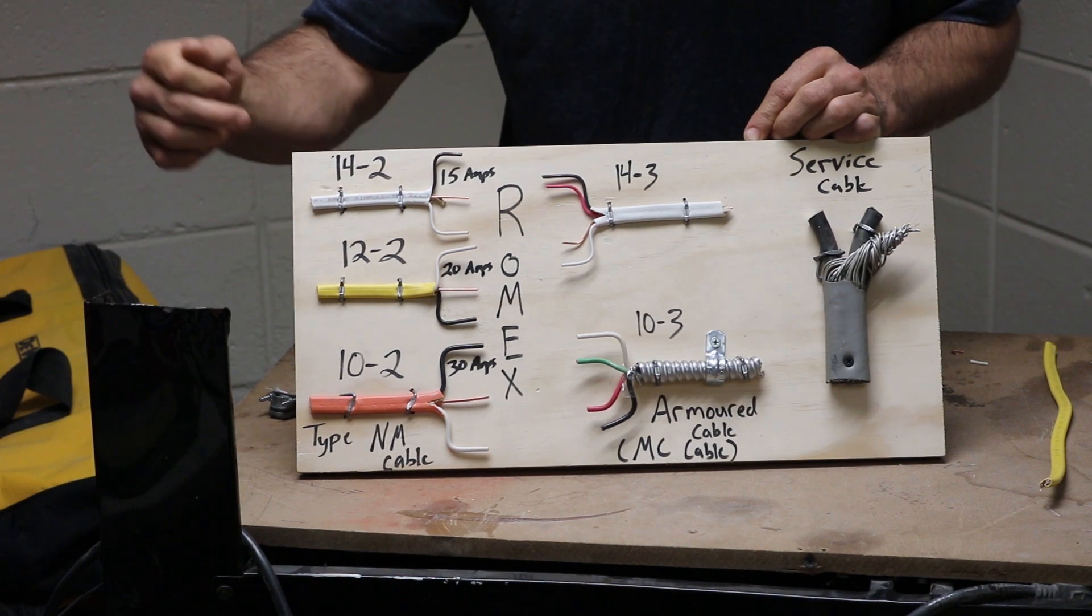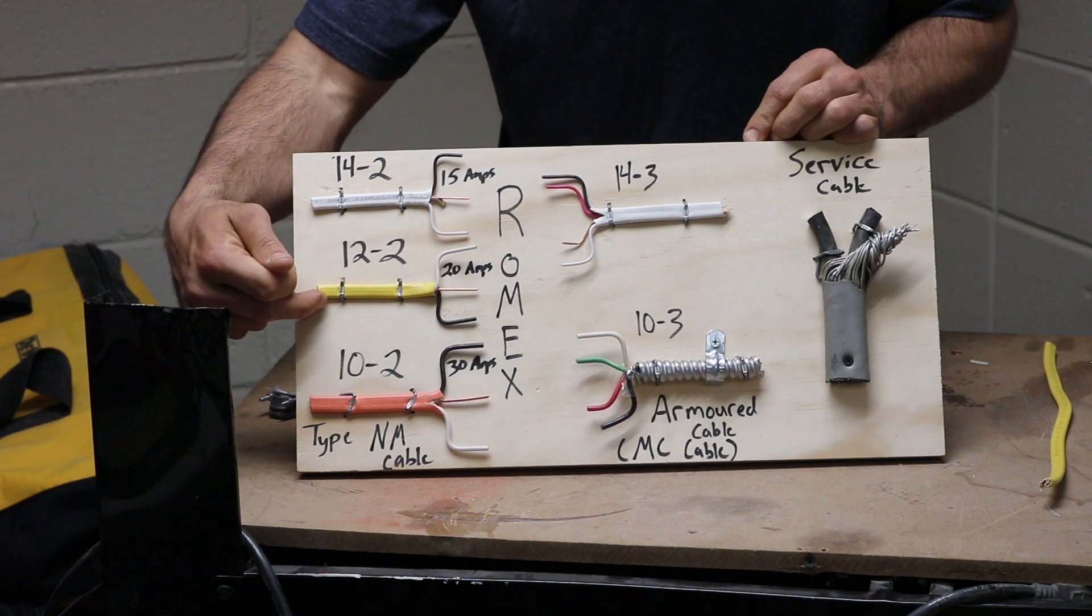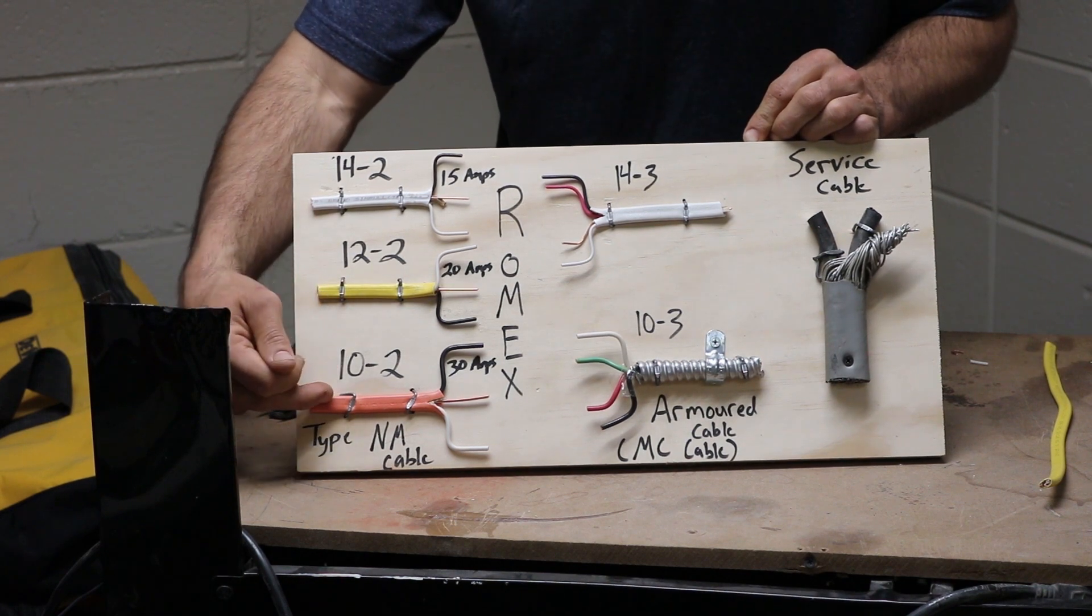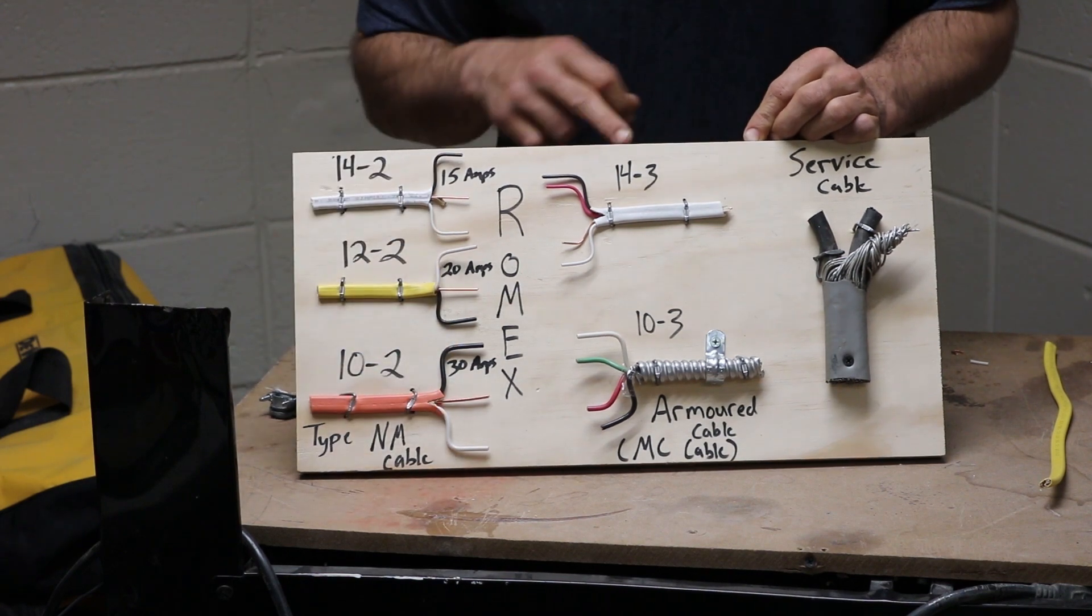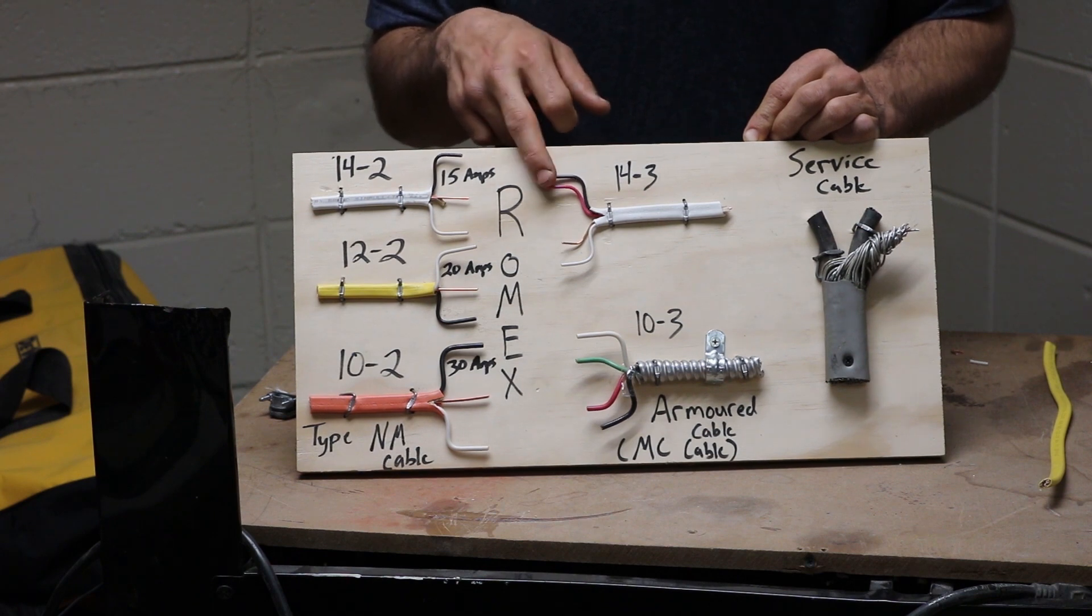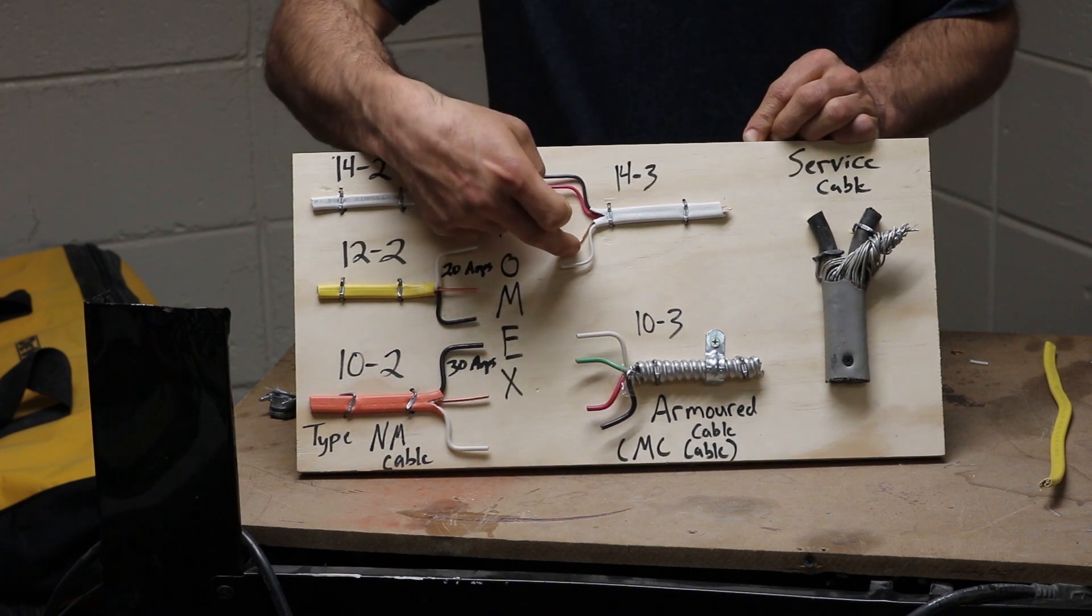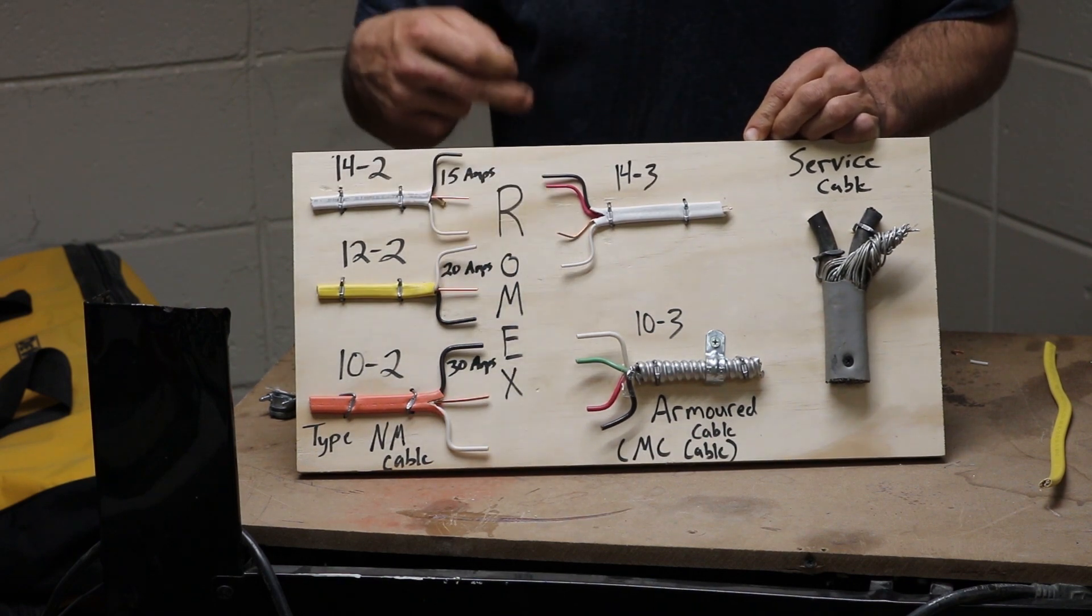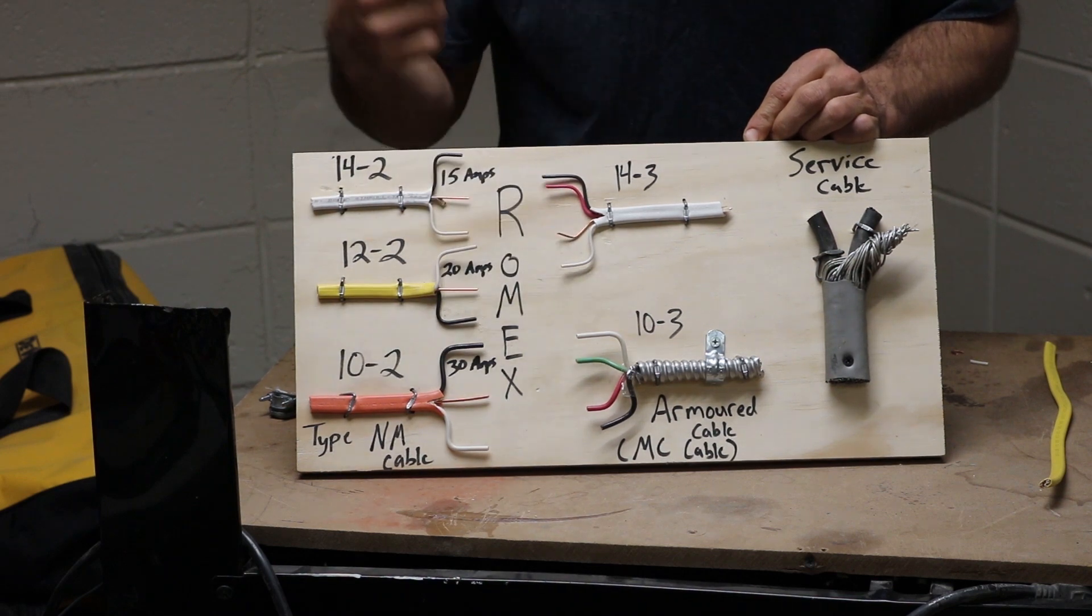Just a quick recap: white is always 14 gauge, 12 is always yellow, and 10 is always orange. Make sure you know your amperages. If you see something like 14-3 right here, you'll have two hots. So you got three conductors: one, two, and three. You do not count the ground wire. So you have two hots and then your neutral wire.